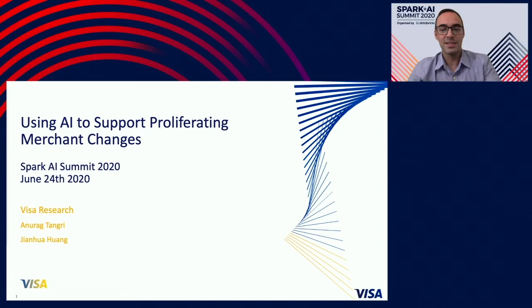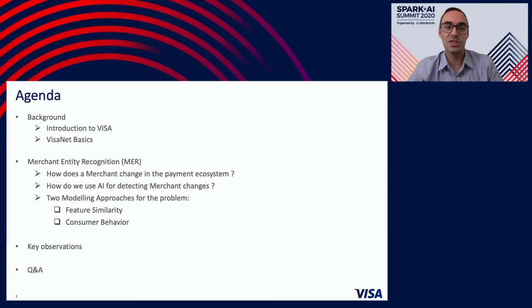Specifically, we want to talk about the changes to merchants in the dynamic payment ecosystem and how we are using AI to detect those changes in time and accurately. So with that, let's dive right in. Here's the agenda for today's talk. We're going to talk about introduction to Visa and VisaNet basics. VisaNet is our payment network. And then our topic for today's talk, which is merchant entity recognition, in short, MER.